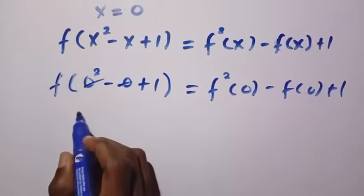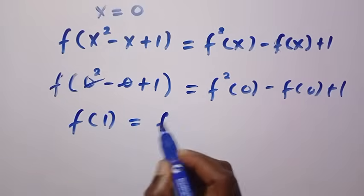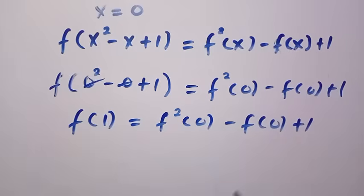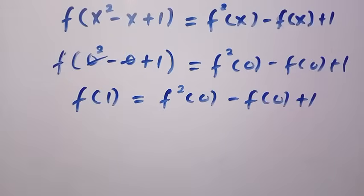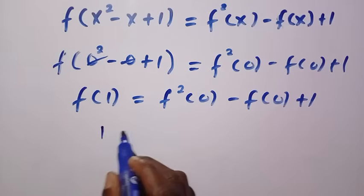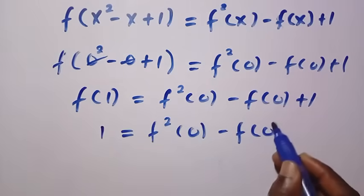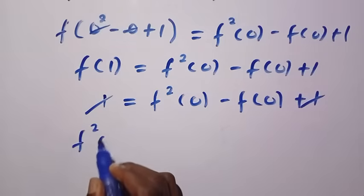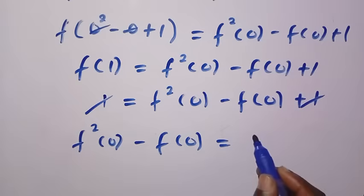So this is cancelled and we have f of 1 as well. This equals f squared of 0 minus f of 0 plus 1. But we have gotten f of 1 above to be 1, so we change this f of 1 to 1. We have 1 equals f squared of 0 minus f of 0 plus 1. So 1 cancelled 1, then we have f squared of 0 minus f of 0 equals 0.